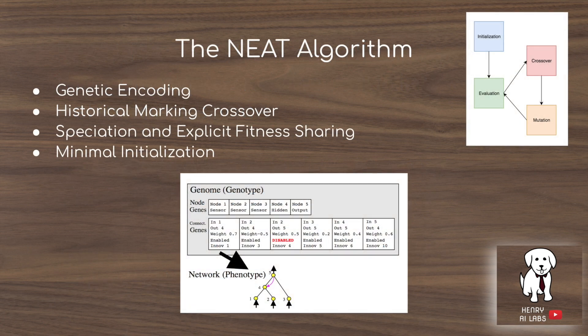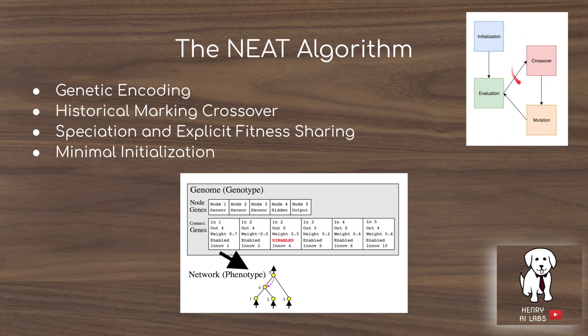The novelty search algorithm is implemented on top of the NEAT framework. NEAT basically starts from a minimal initialization and builds up a neural network topology for control tasks like cart-pole balancing, maze navigation, and biped locomotion. It uses a genetic encoding of a genotype to a network, historical markings that enable crossover, speciation and explicit fitness sharing — a similar idea to the novelty algorithm — and minimal initialization, starting from one node and building up the network.